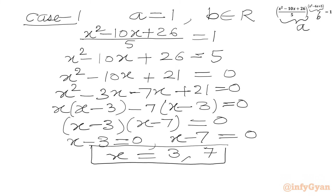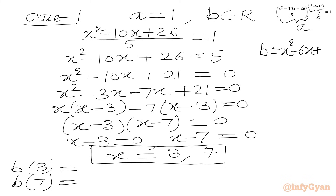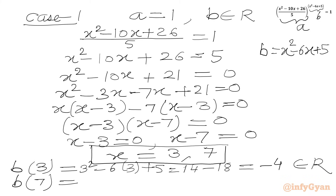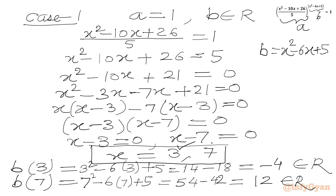Now we have to make sure our power should be a real number. The exponent B is x squared minus 6x plus 5. Checking B at x=3: 3 squared minus 6 times 3 plus 5 equals 9 plus 5 minus 18, which gives minus 4, a real number. So x=3 is a true solution. Checking B at x=7: 7 squared minus 6 times 7 plus 5 equals 49 plus 5 minus 42, which gives 12, a real number. Hence our solution x=7 is also true.